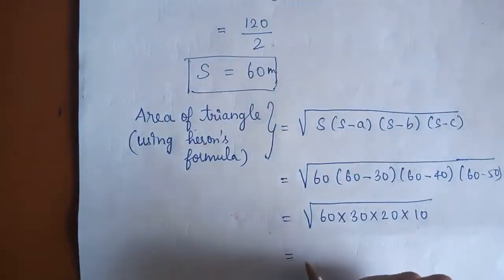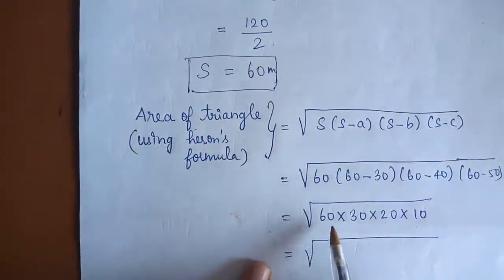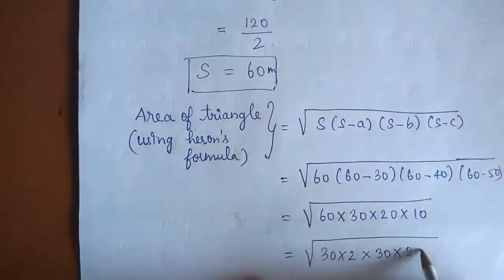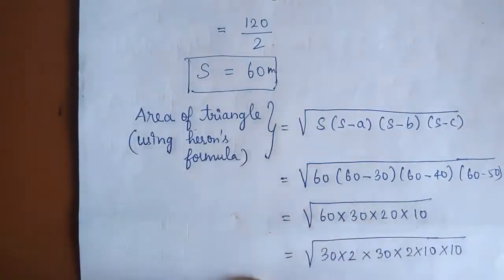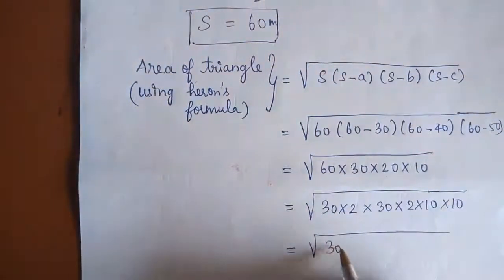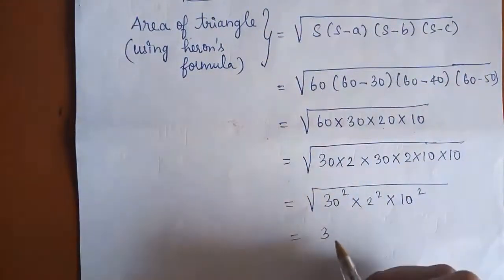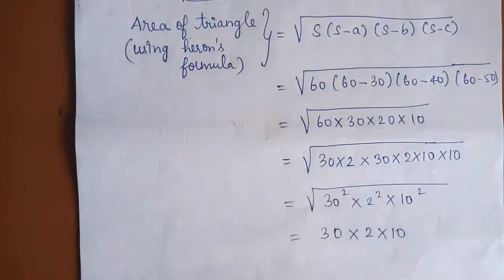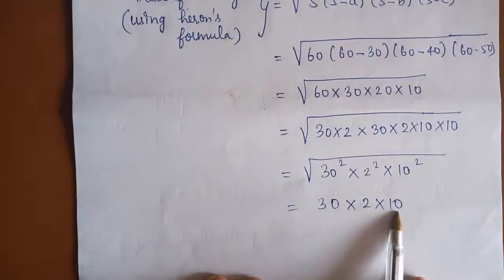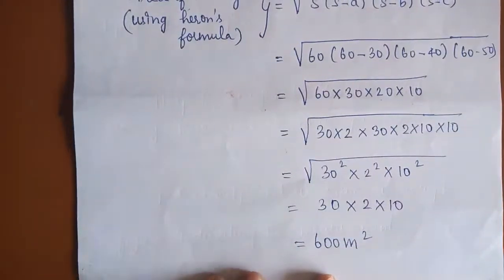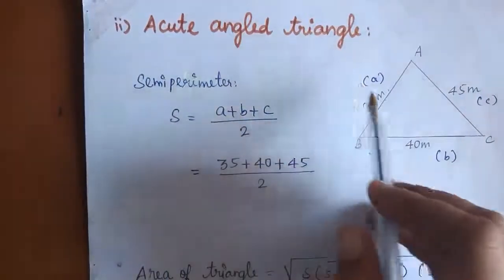Splitting: 60 × 30 × 20 × 10 = 30 × 2 × 30 × 2 × 10 = 30² × 2² × 10. Taking the square root: 30 × 2 × 10 = 600. Therefore, the area of the right-angled triangle is 600 square metres.